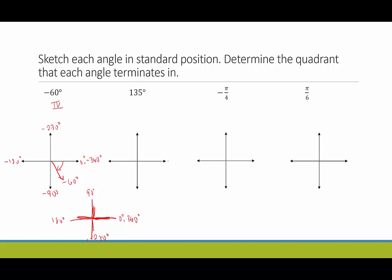135 degrees: I'm going to label — this is zero degrees, up here is 90 degrees, over here is 180 degrees, down here is 270 degrees. 135 is in between 90 and 180, exactly halfway between them. Starting at the origin going counterclockwise since it's positive, this one terminates in quadrant two.